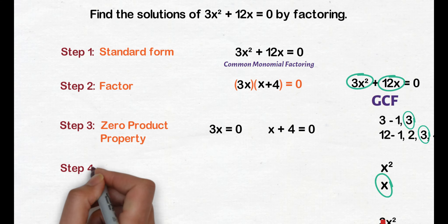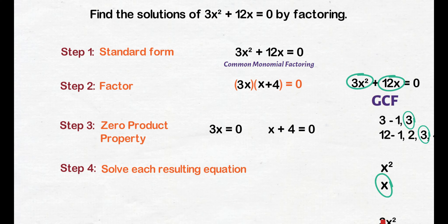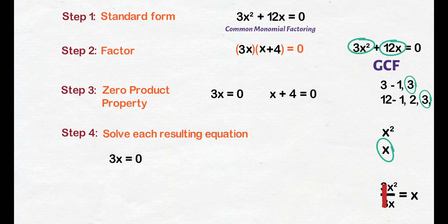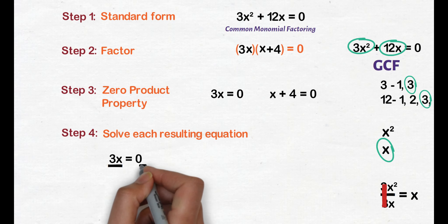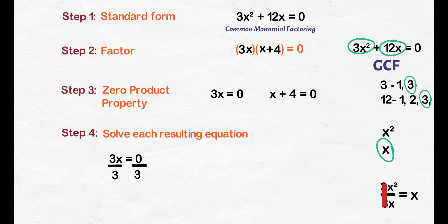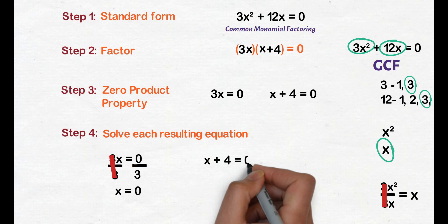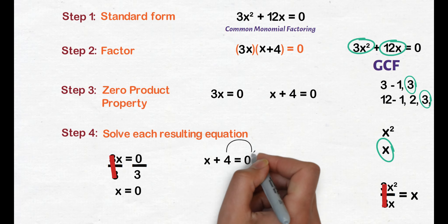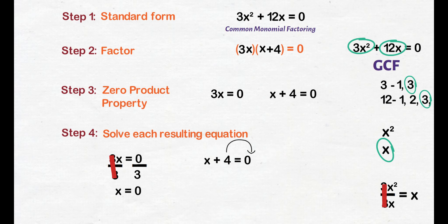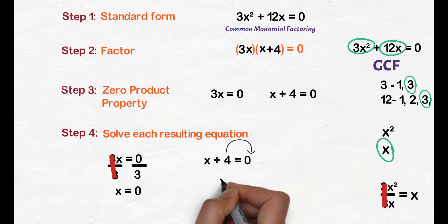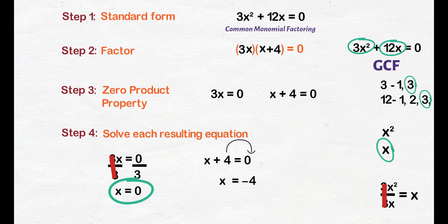Step 4, solve each resulting equation. Unahin natin ang 3x equals 0 — to isolate x, divide both sides by 3, we get x equals 0. Next, x plus 4 equals 0 — transpose 4 to the right side, we get x equals negative 4. So, 0 and negative 4 will be our solutions or roots.